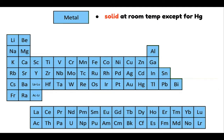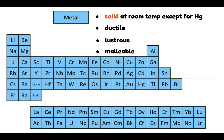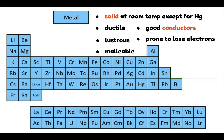Metals are solid at room temperature except for mercury, which is a liquid at room temperature. They are ductile, meaning they can be pulled into thin wires. They are lustrous — or shiny. They are malleable, meaning they can be hammered into thin sheets. They are also good conductors of electricity and heat, and metals are prone to lose electrons easily. For example, we have lithium batteries.